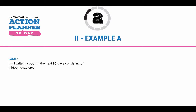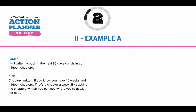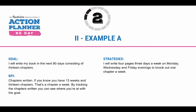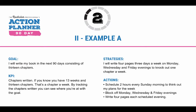Here's an example. Goal: 'I will write my book in the next 90 days consisting of 13 chapters.' KPI: chapters written. So if you have 13 weeks and 13 chapters, that's one chapter a week. By tracking the chapters written, you can see where you're at with the goal. Strategy: write four pages three days a week on Monday, Wednesday, and Friday evenings to knock out one chapter a week. Actions: schedule two hours every Sunday morning to think out your plans for the week, then block off Monday, Wednesday, and Friday evenings and write four pages each scheduled evening. You follow that, and you can get it done in 90 days.